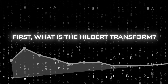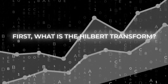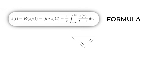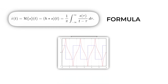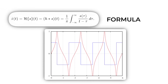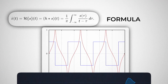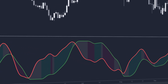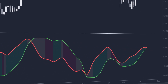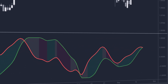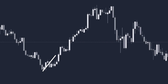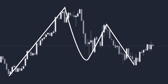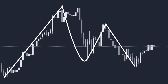First, what is the Hilbert Transform? Basically, it is a technique that helps identify the phase and frequency of a cycle in a data series, such as market prices. The Hilbert Transform Oscillator takes this technique and applies it to technical analysis to detect market cycles, especially points where price could reverse.